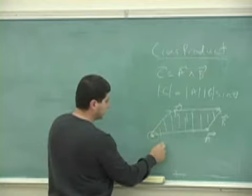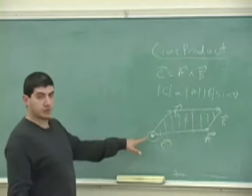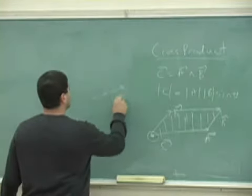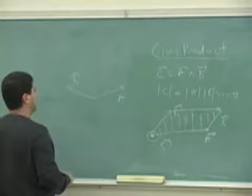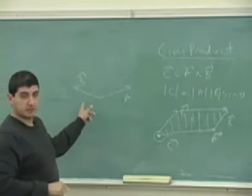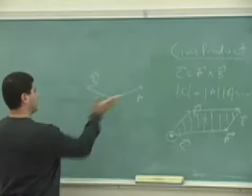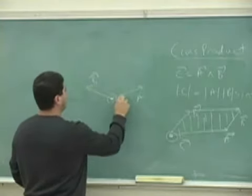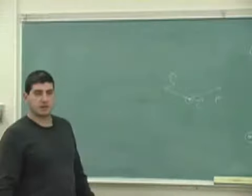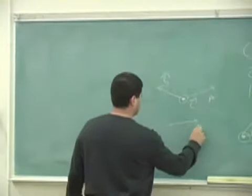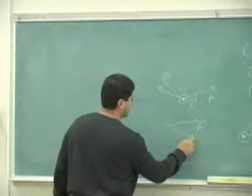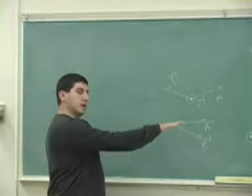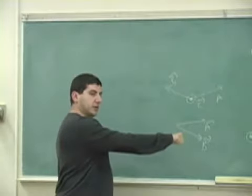So vector C is out of the board, and here's how we draw out of the board. If A was like this and B was like that, and if the angle was more than 90, it still would be out of the board — A crossed into B, out of the board. If A had been like this and B had been like this, then A crossed into B would be into the board.